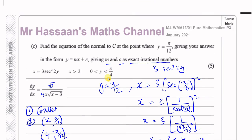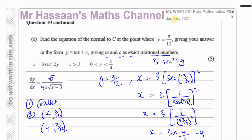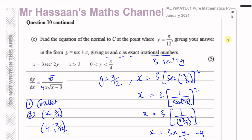And that's the answer to this question, which was the final question on this paper — question 10 from the P3 International A-Level January 2021 paper. All the other questions you'll find in the playlist linked here. Questions to do with differentiation and trig identities are also available in separate playlists. Thank you for watching and see you soon.